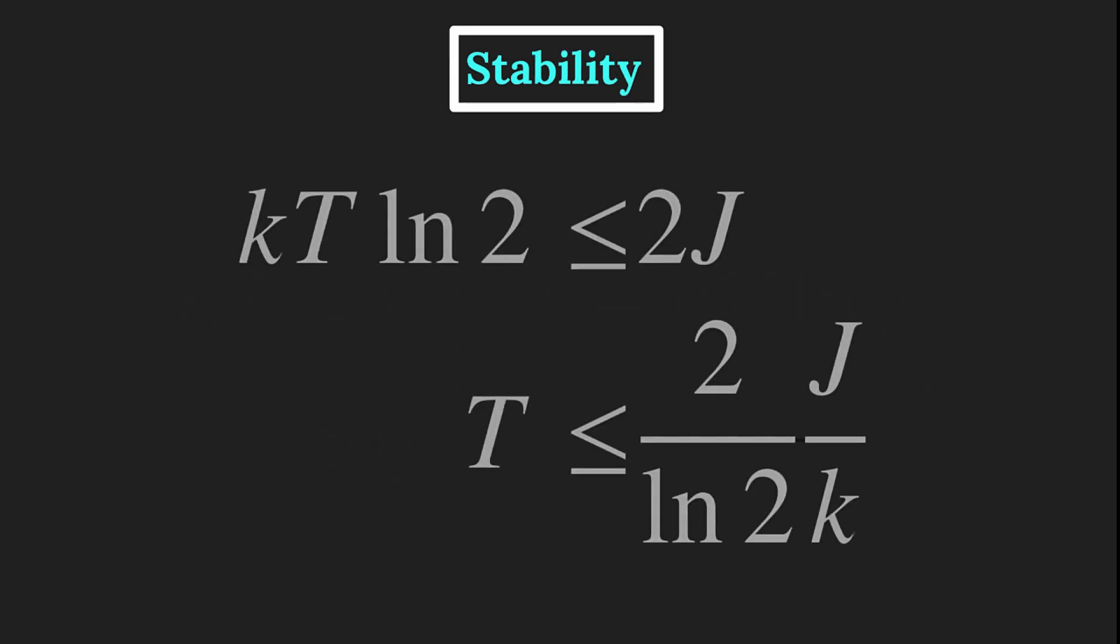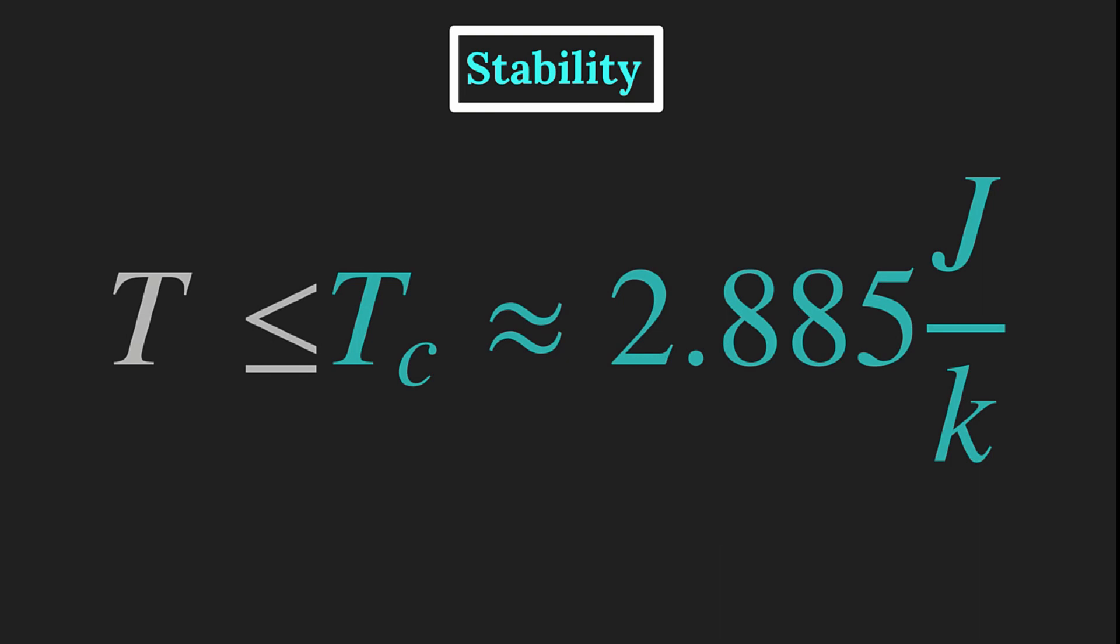Which in turn implies the following stability criterion for the temperature. Note that the inequality does not feature L, so it holds for the creation of any domain. We get that Tc is about 2.885 times J over K.